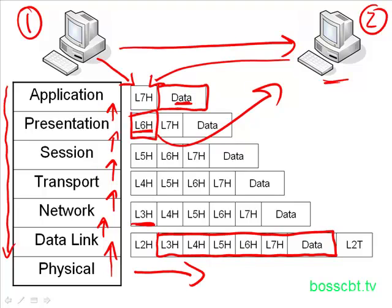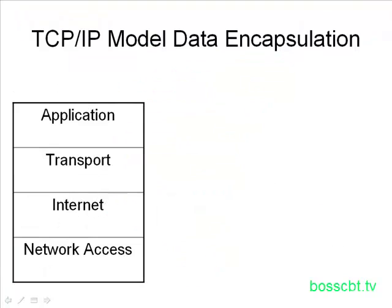So that is encapsulation in the OSI model. Let's move on and take a look at the TCP/IP model. Here we have the TCP/IP model with its four layers: application, transport, internet, and network access.